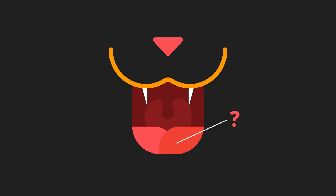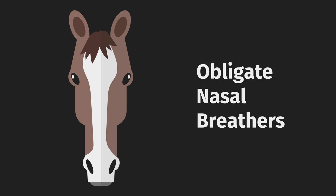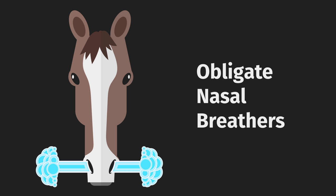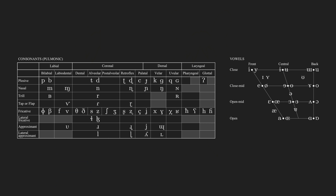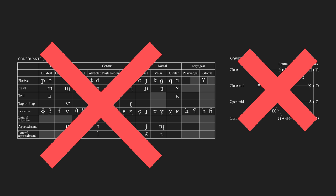Study your target species' tongue, mouth, teeth, nose, and throat to find out what speech sounds they potentially could or could not produce. Horses, for example, are what's called obligate nasal breathers — they can only breathe through their noses — so they'd never be able to make the obstructions in airflow with the tongue, lips, etc. involved in human speech. That means if horses could talk, they'd never be able to form consonants and vowels the way we do.